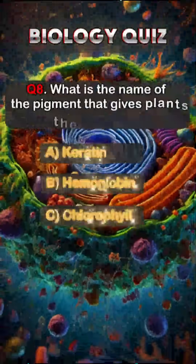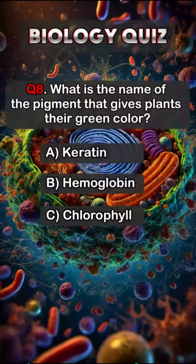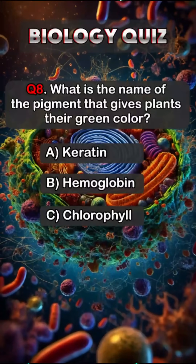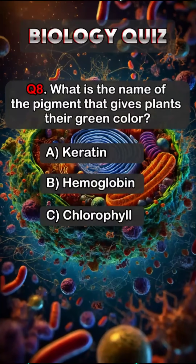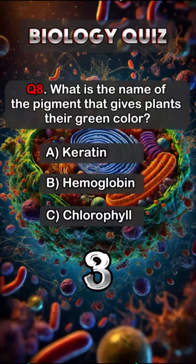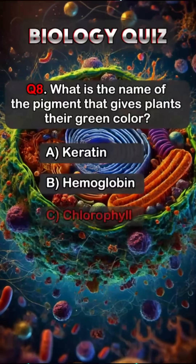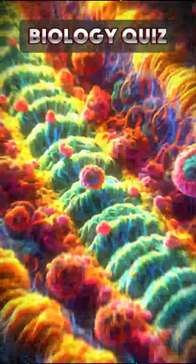Question 8. What is the name of the pigment that gives plants their green color? Answer C. Chlorophyll.